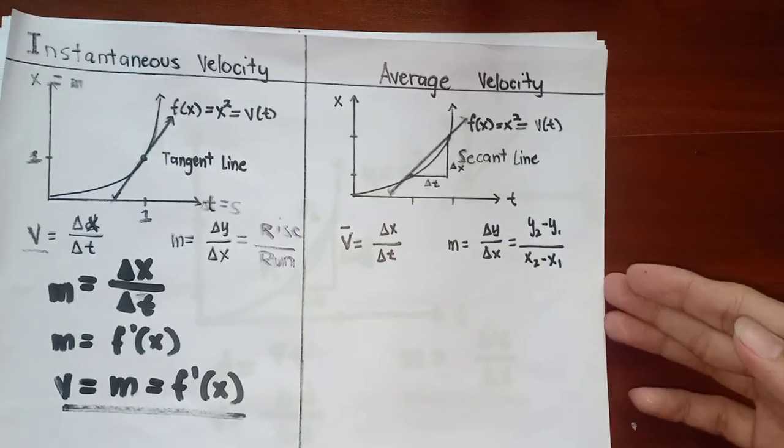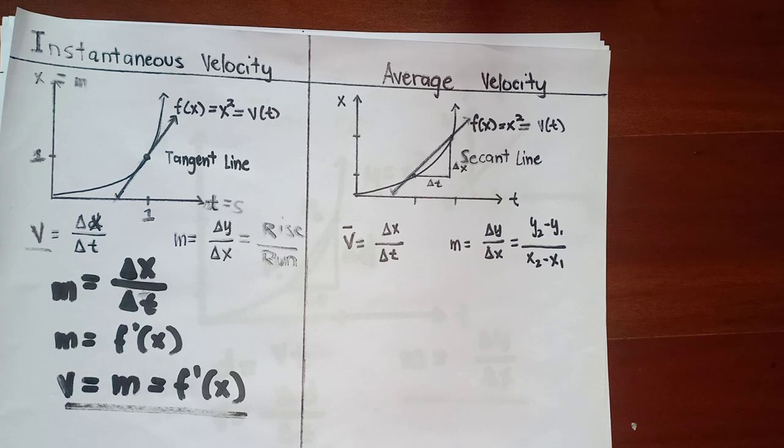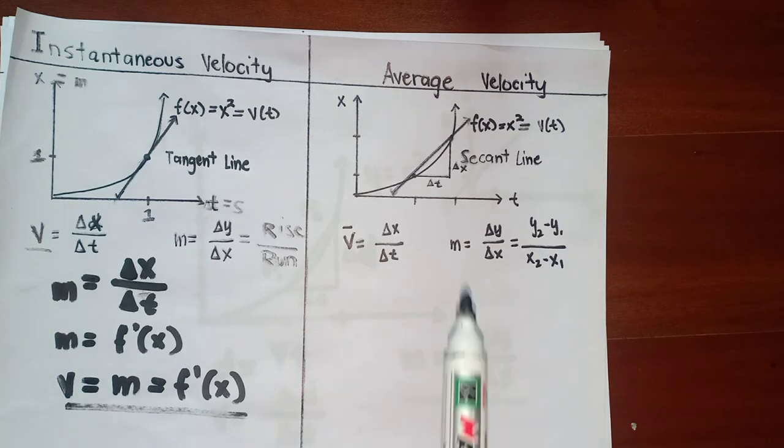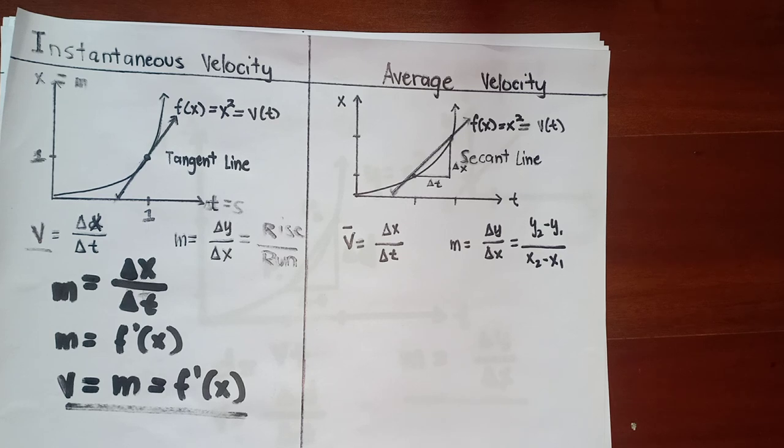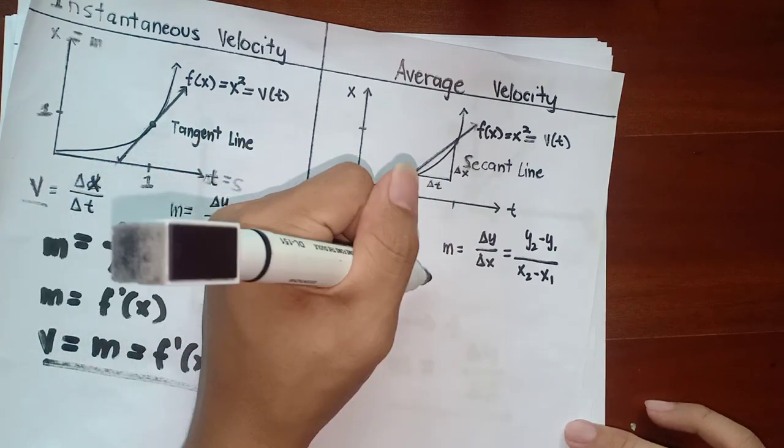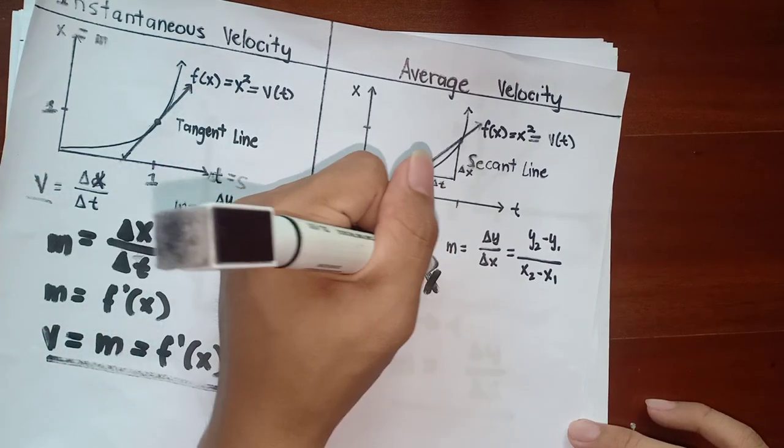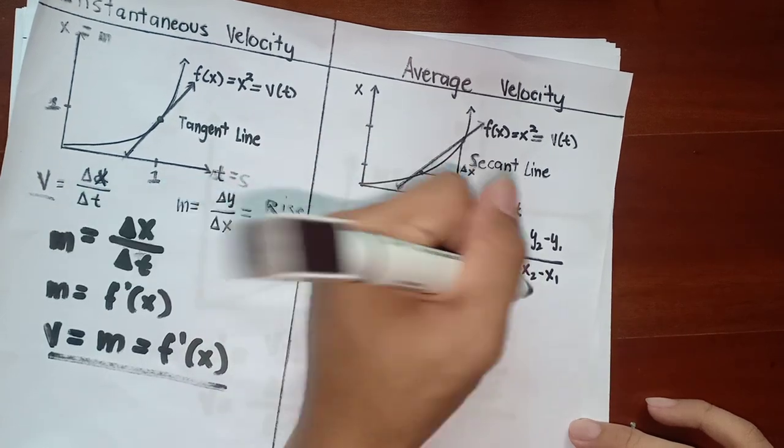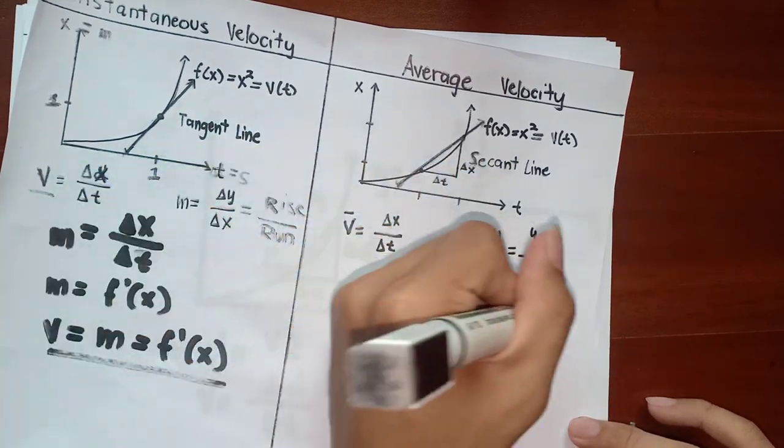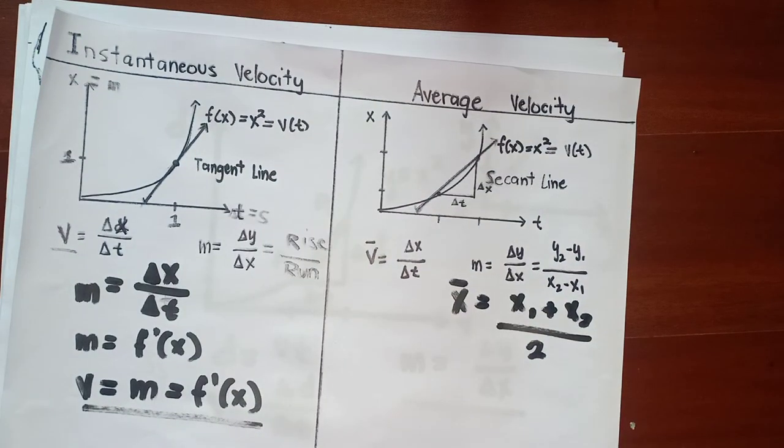Now for average velocity. Average velocity is not like instantaneous velocity. Average means there are two or more points that can be included. I have only two points here to make it easier. The more points you have, the harder it is to solve the average velocity. When you calculate average, you sum them up and divide, right? That's how you calculate average.